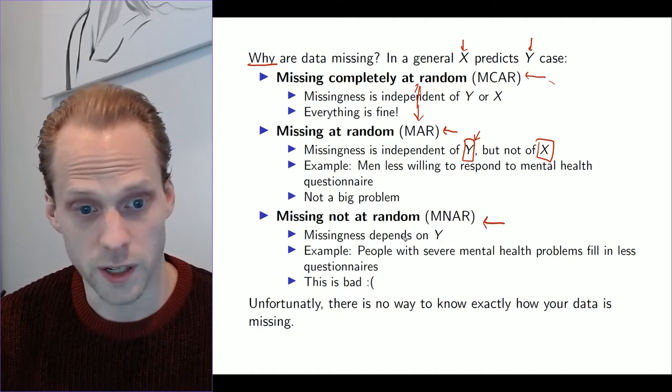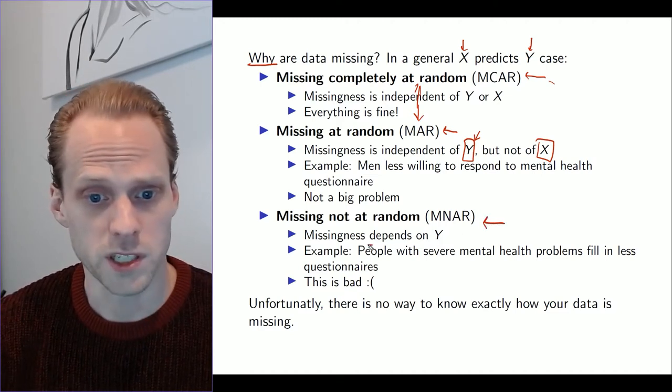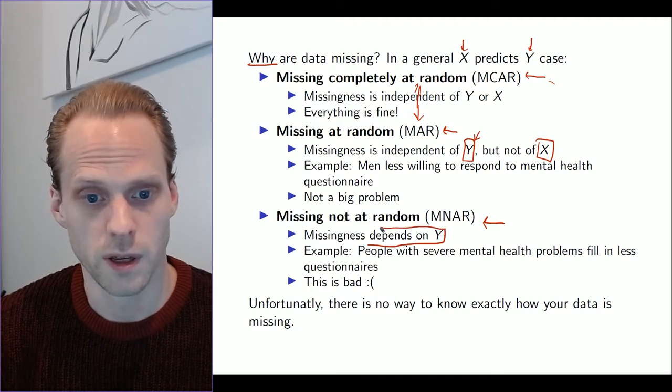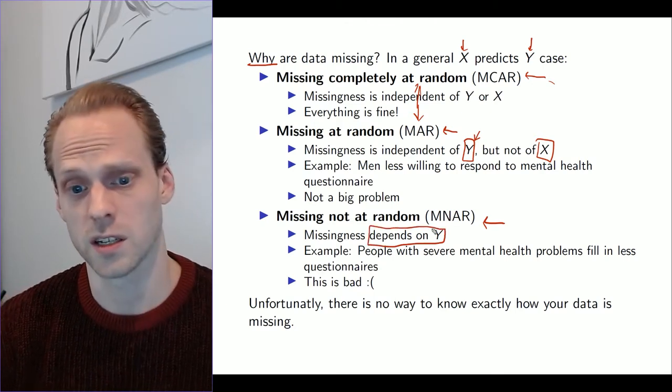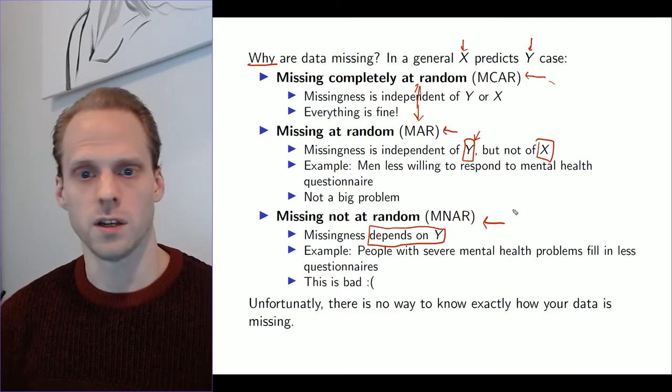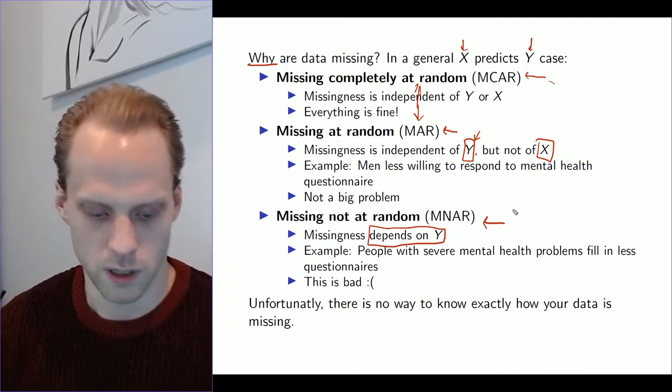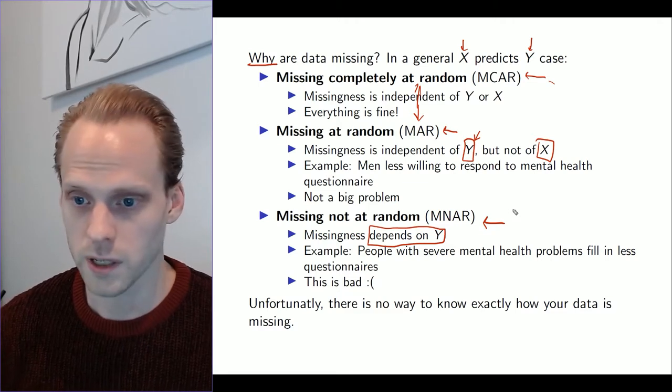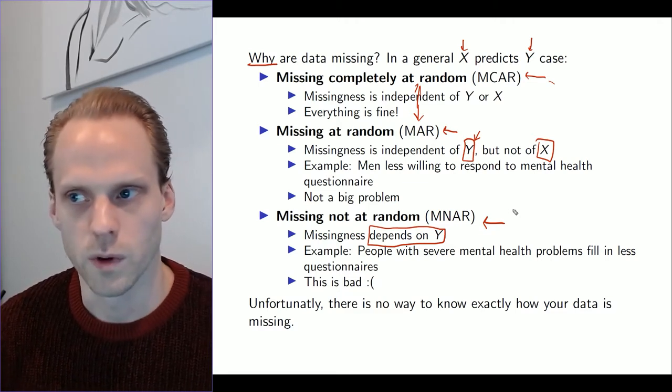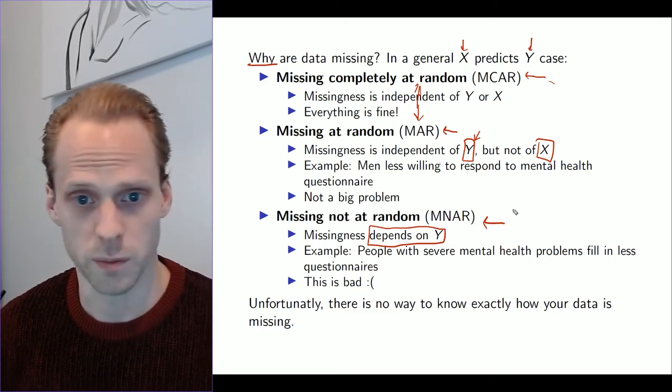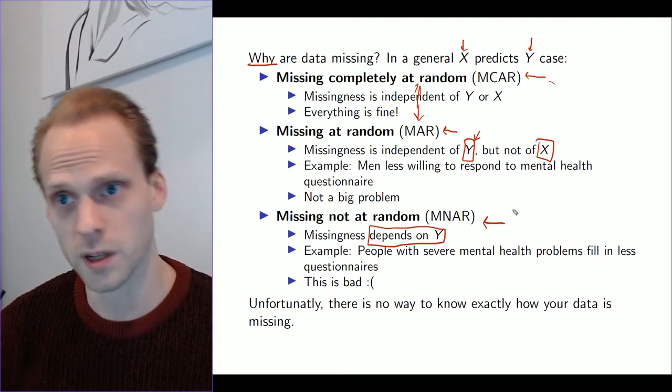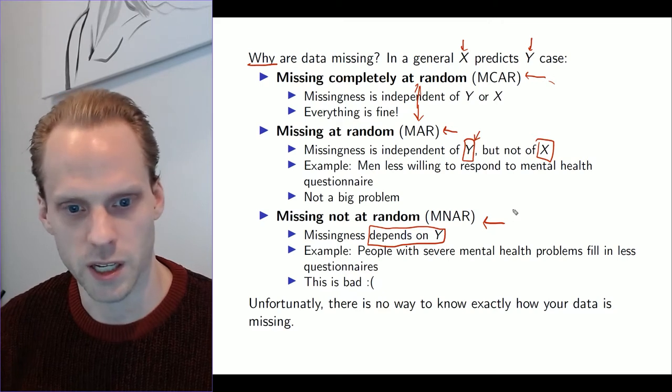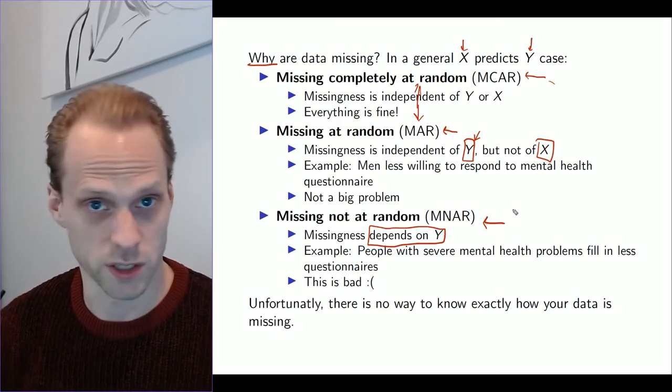In missing not at random (MNAR), your missingness depends on Y itself. What this means is that you see a question and you think, I need to say yes to that or I need to score high on that, but I don't want to give that response. For example, it might be a very sensitive issue. People have no problem saying no to it, but they might have problems saying yes to it, like very severe mental health questions or things like that.